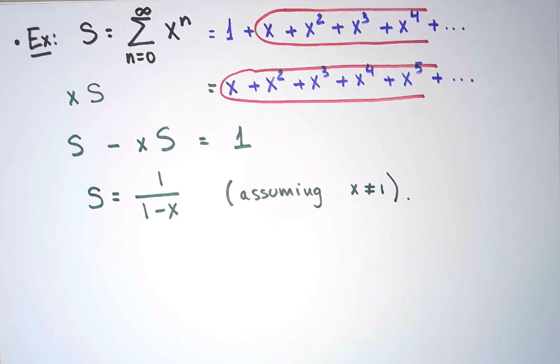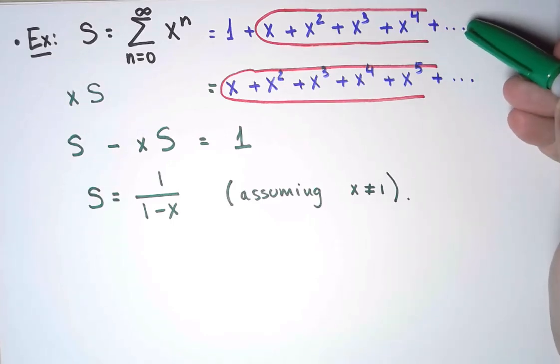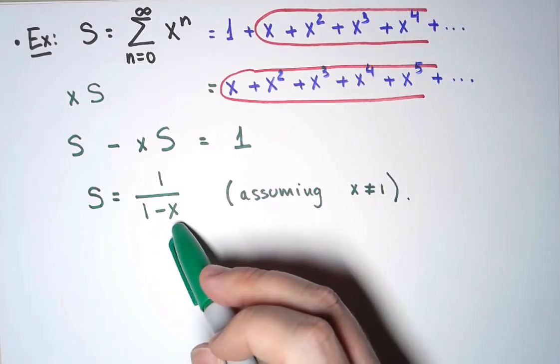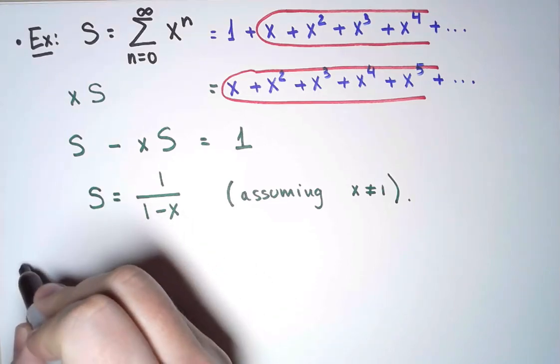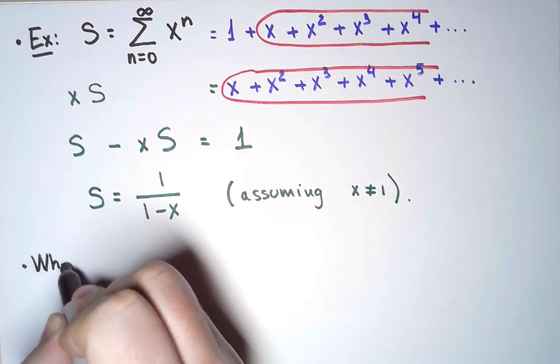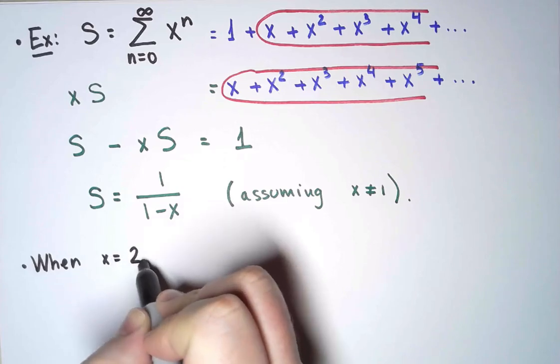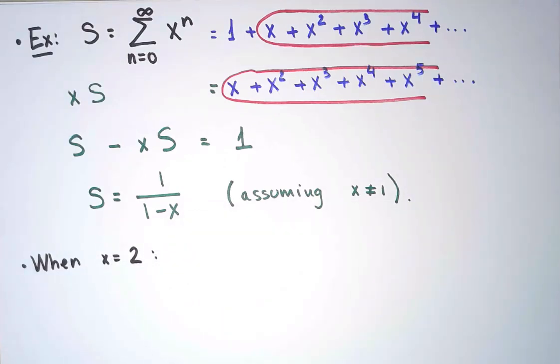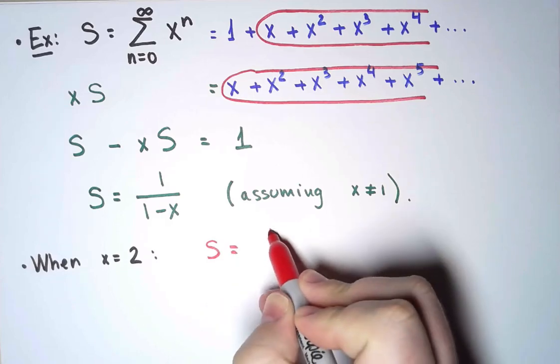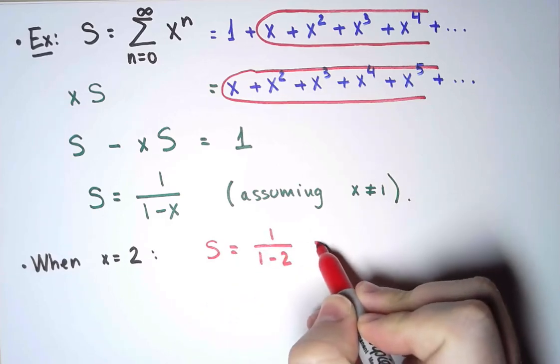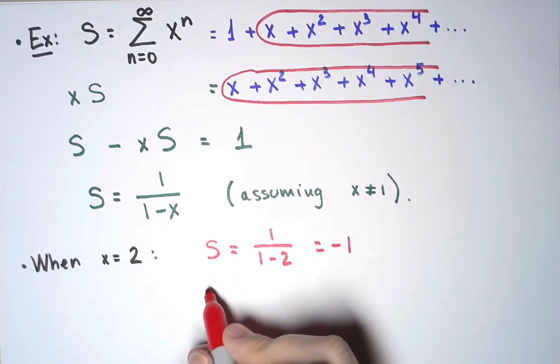So I got a value for this infinite sum that works for any value of x except 1. Well, let's test that. For example, I can take this same sum and evaluate it when x equals 2. Let's see what happens. When x equals 2, on the one hand, I have an expression for the sum, so the sum is going to be 1 over 1-2, and that's simply minus 1.